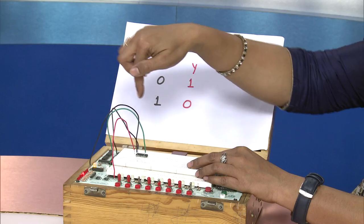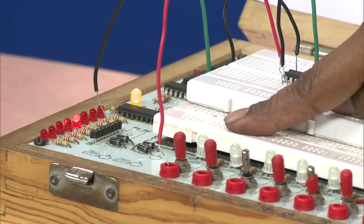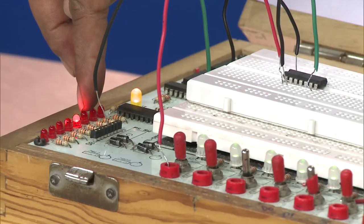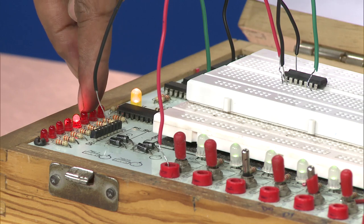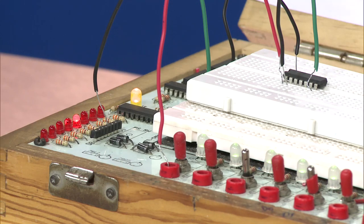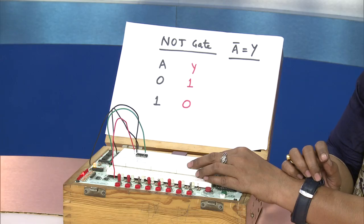When the input is 0, we can see the LED is in the off state. The output is automatically showing a 1, which means that the input is inverse over here, which is typically the characteristic of a NOT gate.